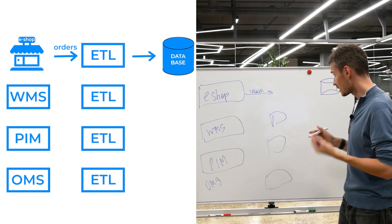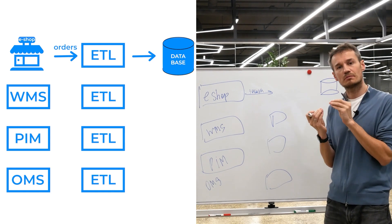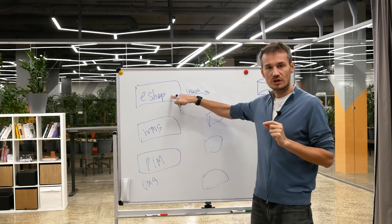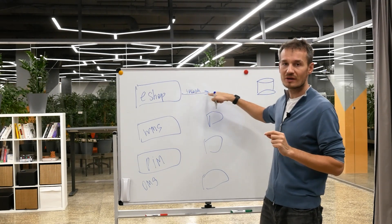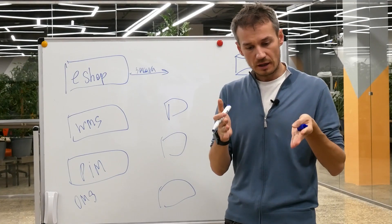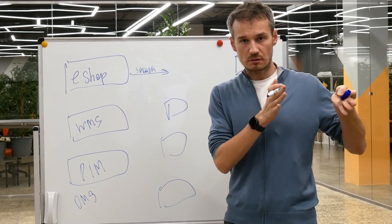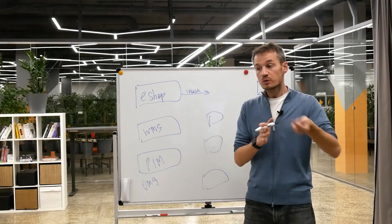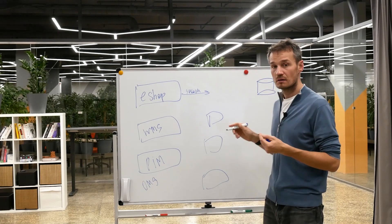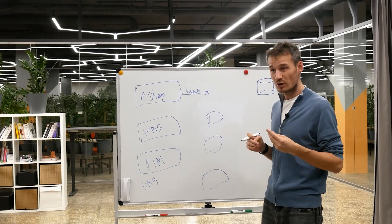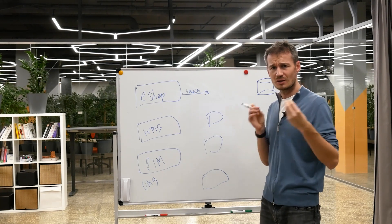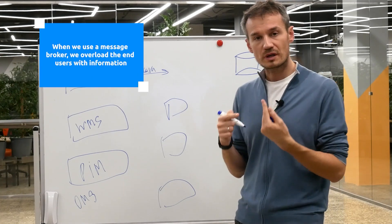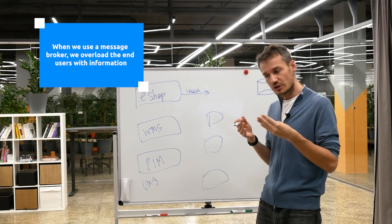But if there was a database, we could easily get the orders that we would need. The second problem is that sometimes the end sources — the services — offer us duplicate information. A data batch can contain data that has already been sent to us, for example, the same orders. If we have a database, we can easily avoid this problem because we're not even going to store it — we're going to create special keys to eliminate duplicates and so on. So this means that if we are to use a message broker, we will overload the end users with information.